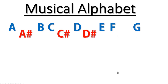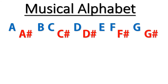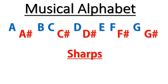Continuing on: E, F. Between F and G is F sharp. And remember, if we carry on past G there's a space between G and A — so between G and A there would be G sharp. This covers all the sharps going upward.